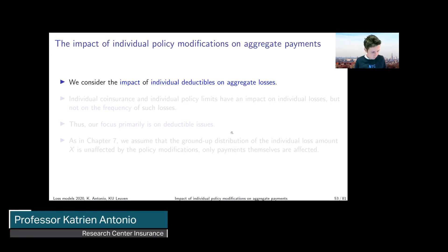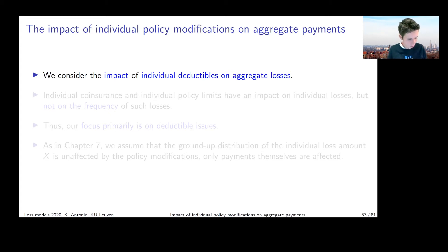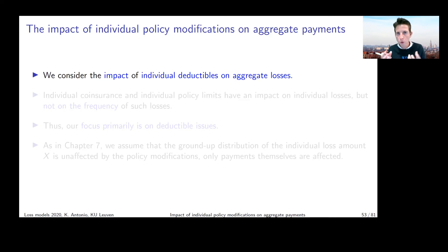We're looking at the distribution of S when each of the terms in S is subject to a deductible. This relates to something I explained earlier when discussing the impact of working per loss or per payment when thinking about the technical price or risk premium on a portfolio. Whether you work per loss or per payment when expressing the pure premium on a contract, it's the same kind of thing.